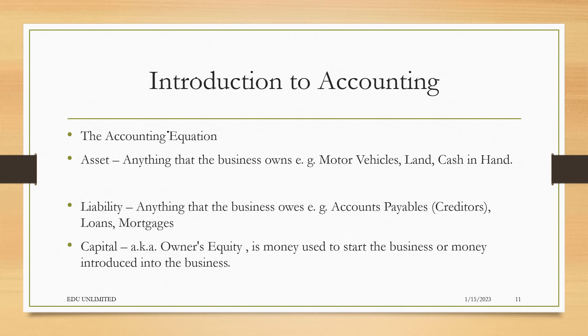Our next slide defines assets, capital, and liabilities. Simply put, different books have different definitions, but over the years I have used this both as a student and as a teacher of accounts. An asset is anything that the business owns — in personal life, this could be furniture, a house, a car, a laptop, a cell phone. For the business, it could be motor vehicles, land, cash in hand, cash at bank, or money in an investment account. Liability, simply put, is anything that the business owes.